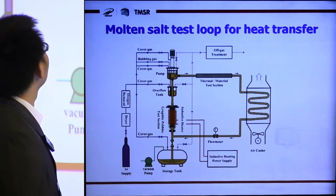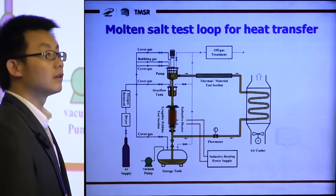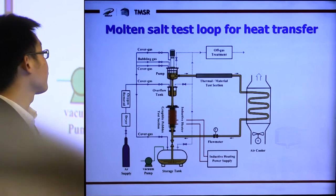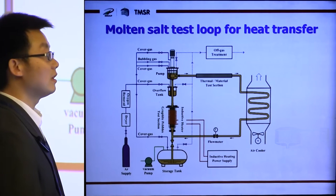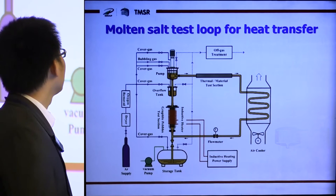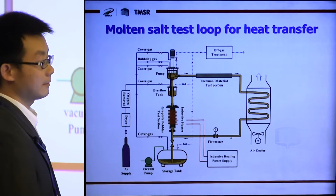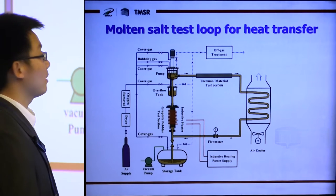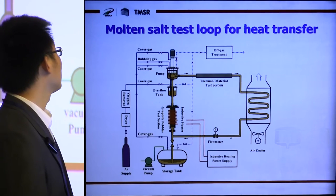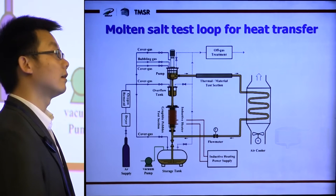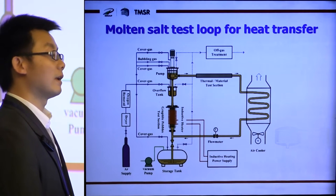This is the molten salt test loop for heat transfer designed by our department. In a real molten salt reactor system, this part may be the reactor core, and this may be the heat exchanger connected to the electrical power plant. The yellow pipe represents the fluid molten salts.